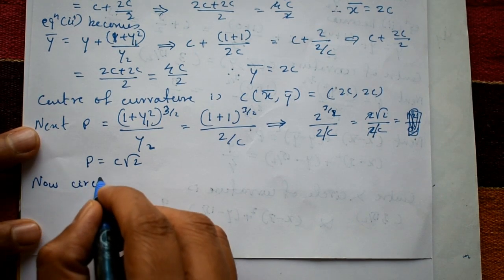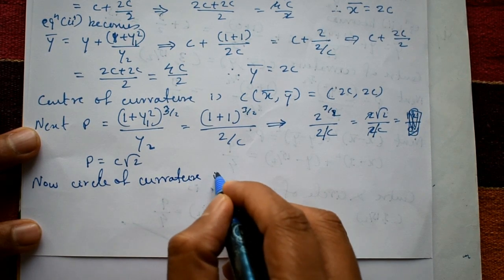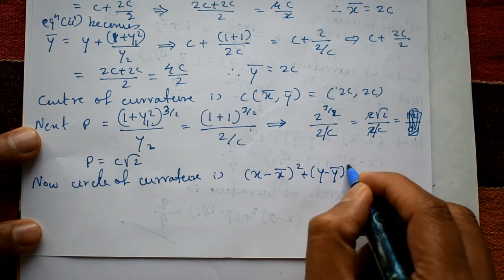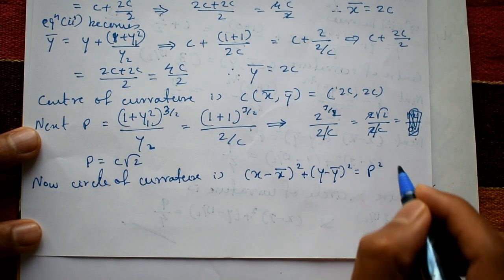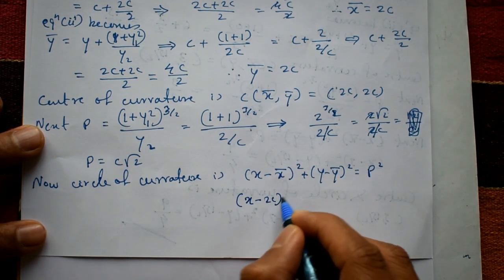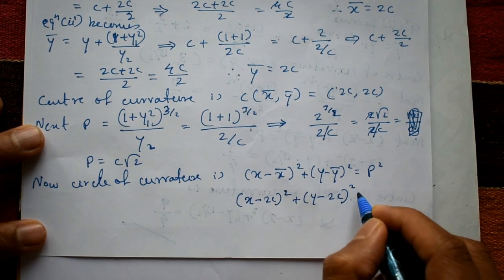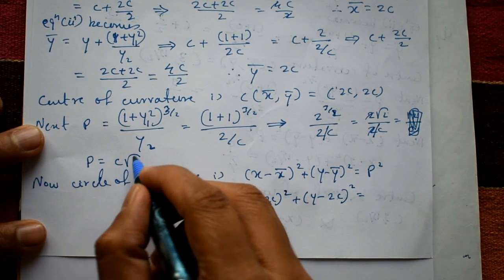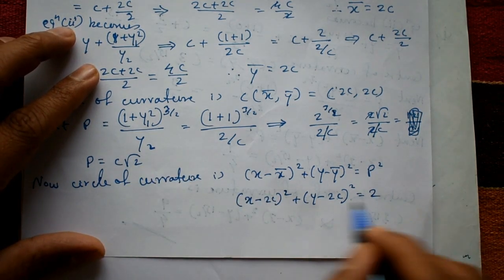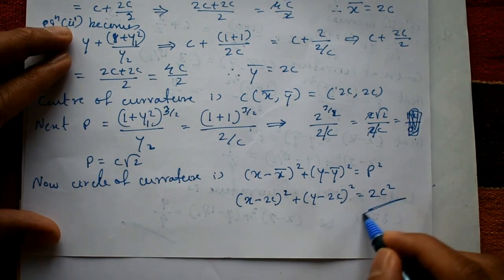The circle of curvature is (x − x̄)² + (y − ȳ)² = ρ². Substituting x̄ = 2c, ȳ = 2c, and ρ = c√2: (x − 2c)² + (y − 2c)² = (c√2)² = 2c². This is the required solution.